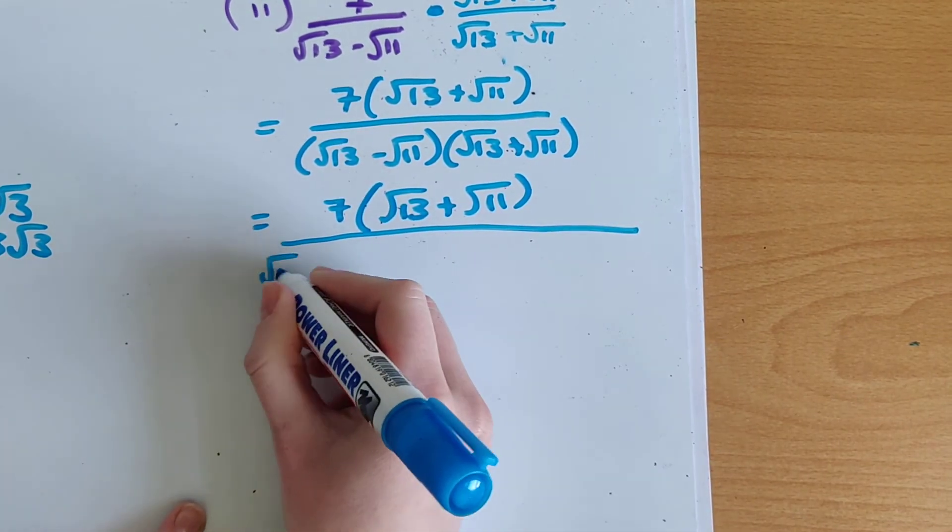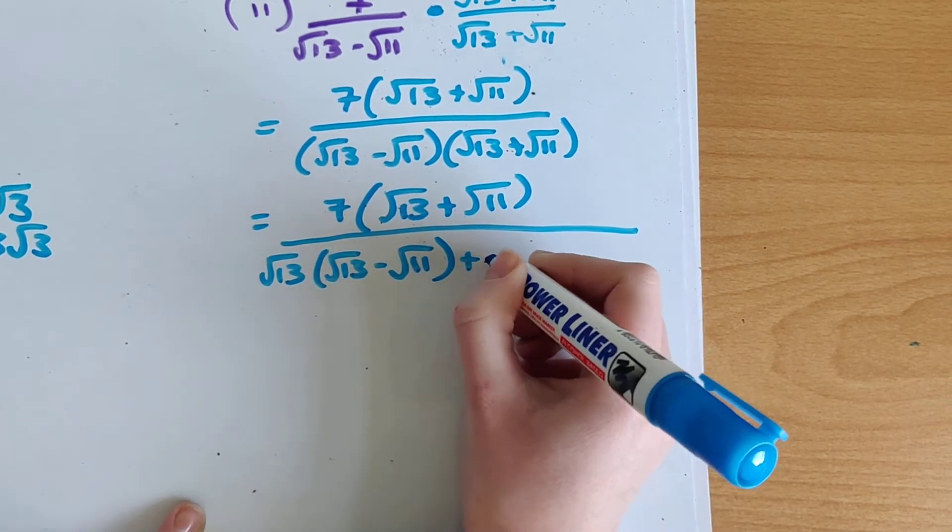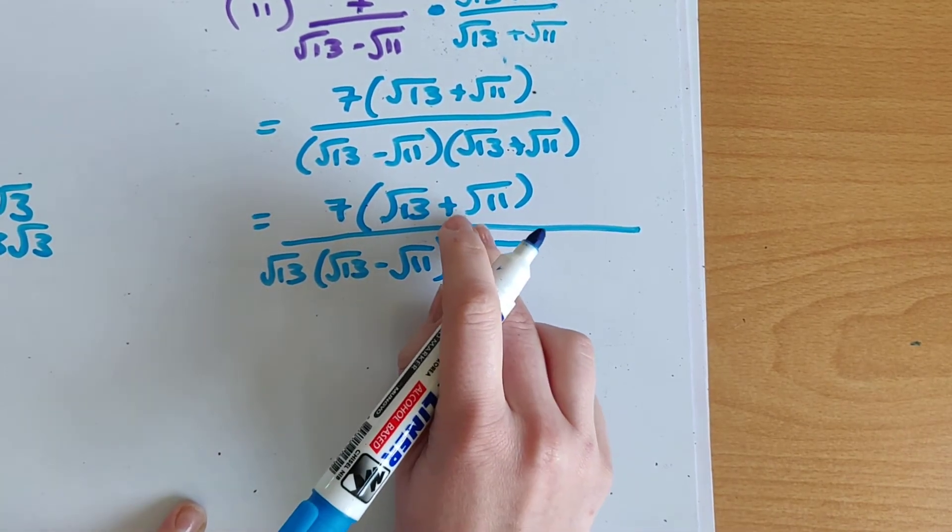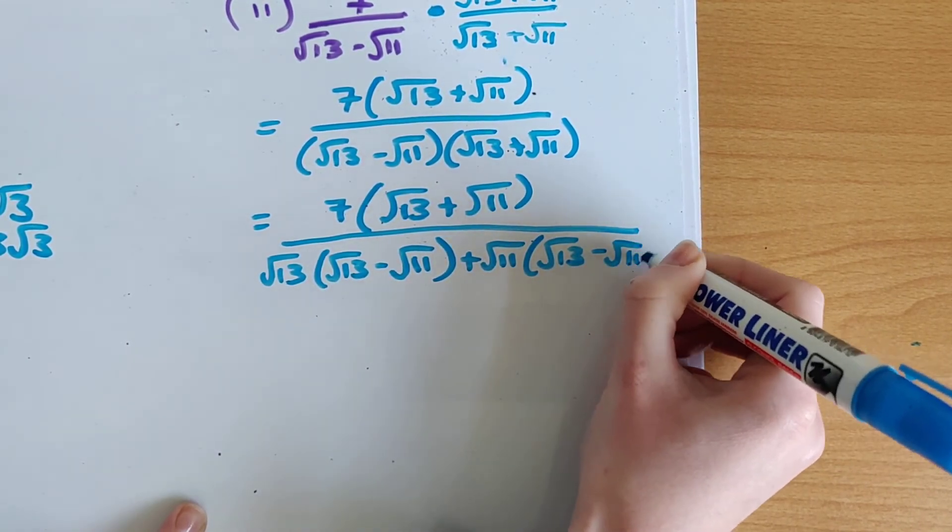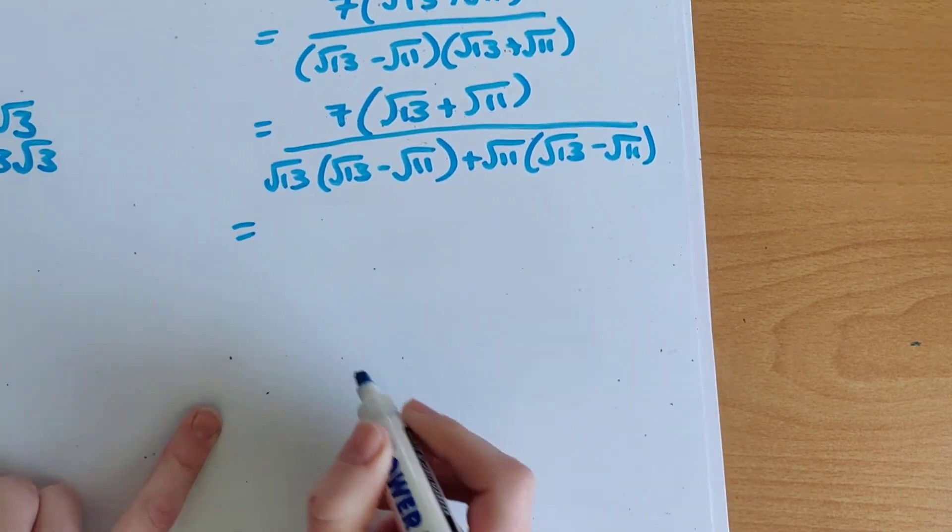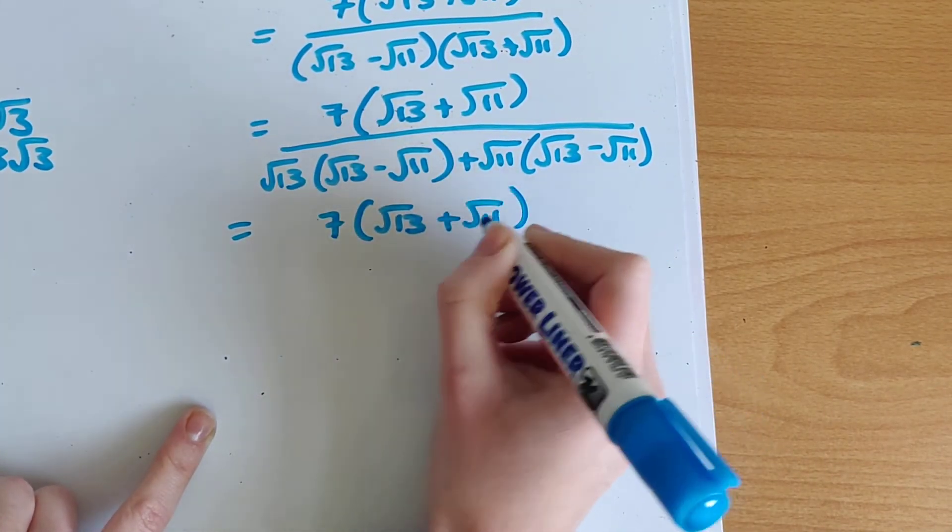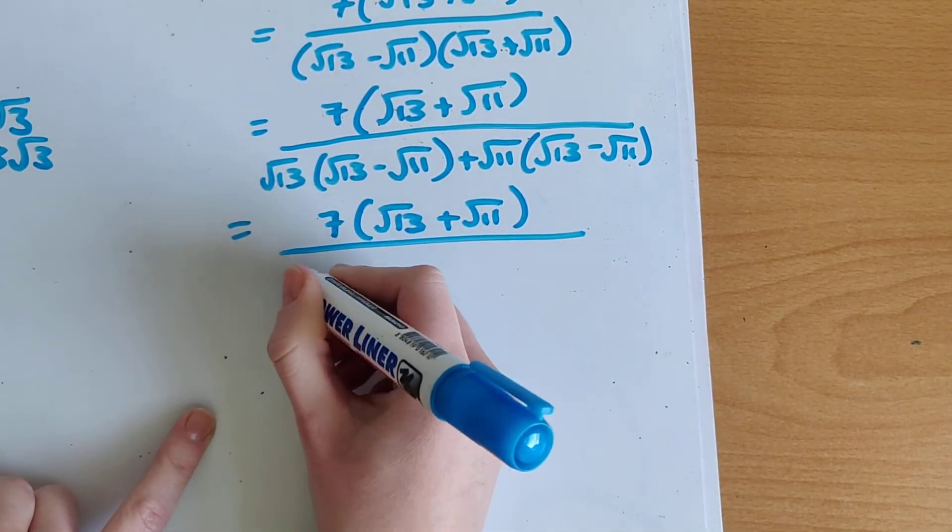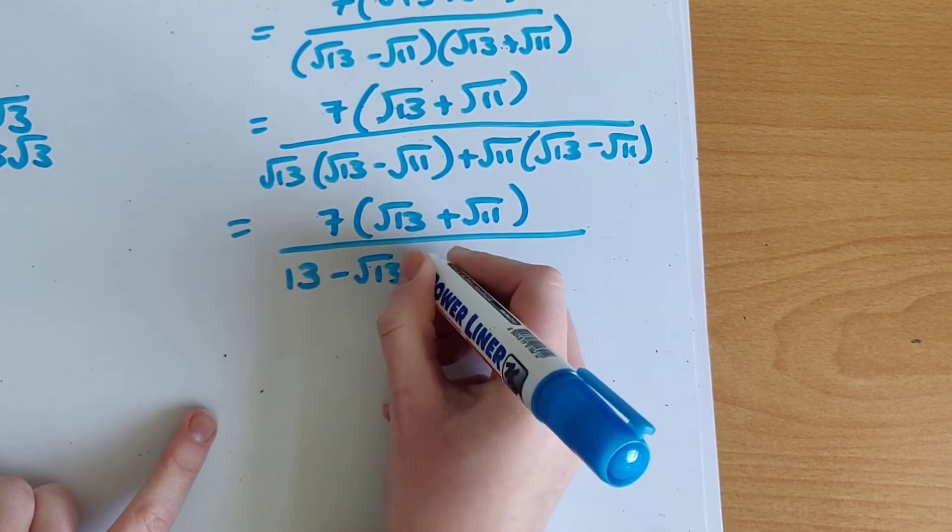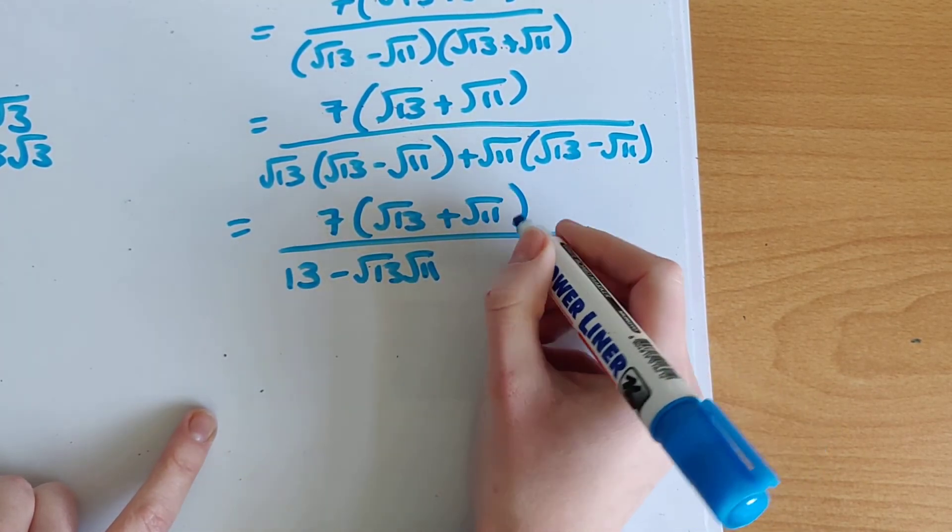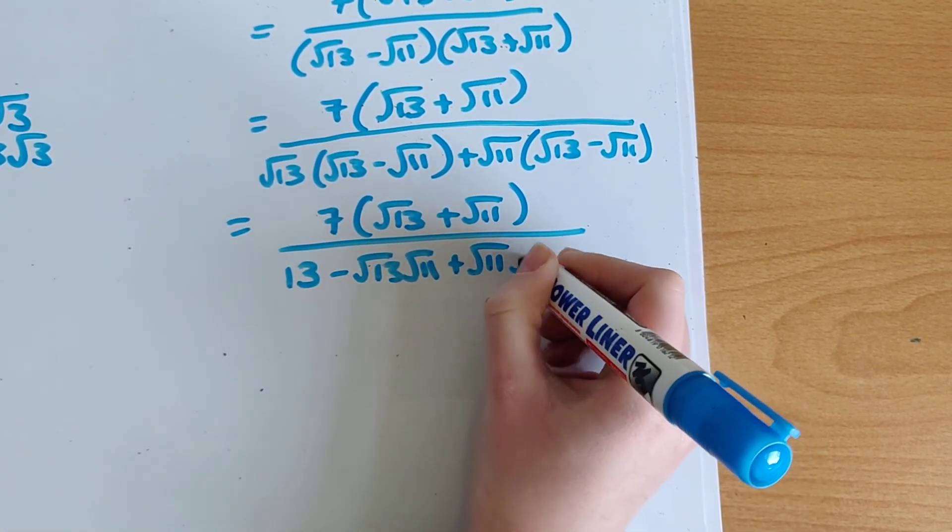Which means I'm going to have root 13 by root 13 minus root 11 plus root 11 by root 13 minus root 11. And now we multiply out the bottom. So on top I still have 7 by root 13 plus root 11. On bottom, root 13 by root 13 leaves me with 13. Root 13 by minus root 11 leaves me with minus root 13 root 11. Plus root 11 by root 13 gives me plus root 11 root 13.